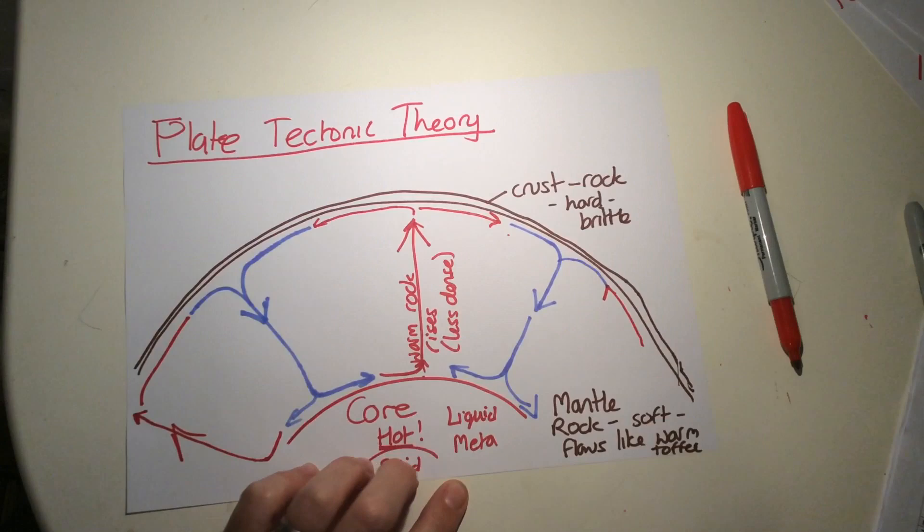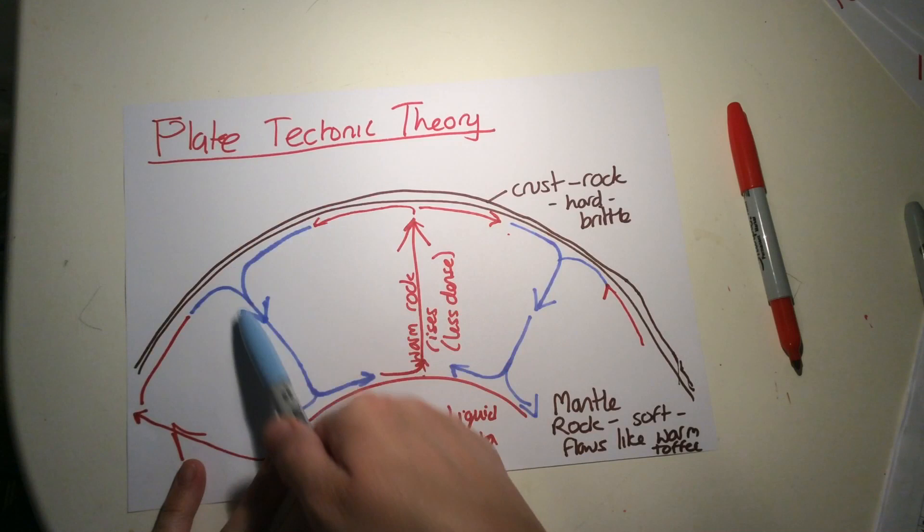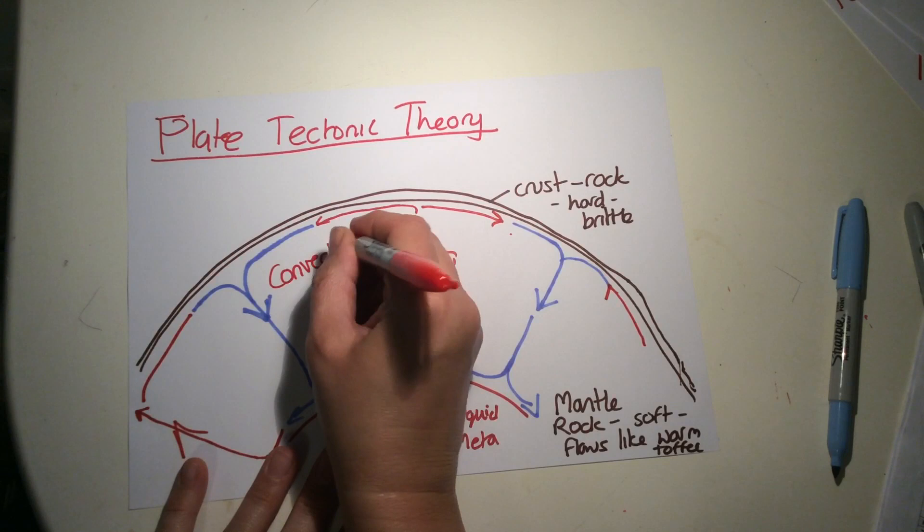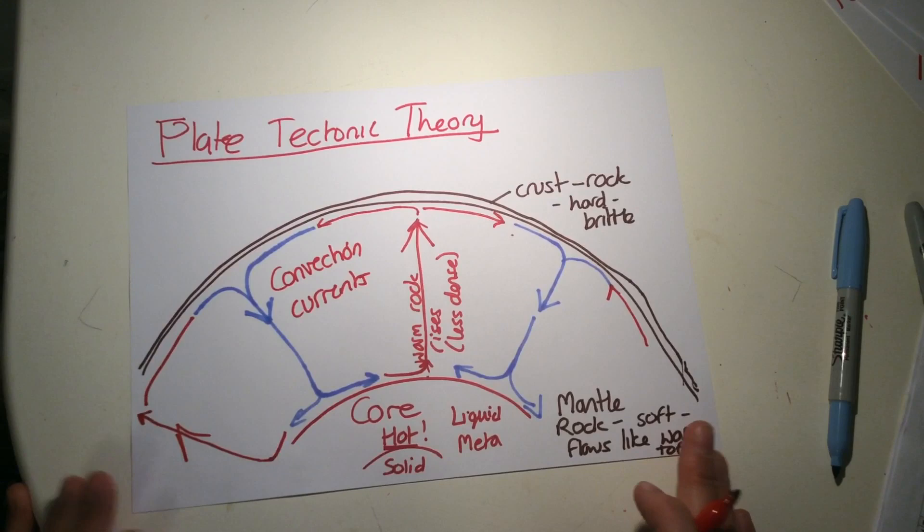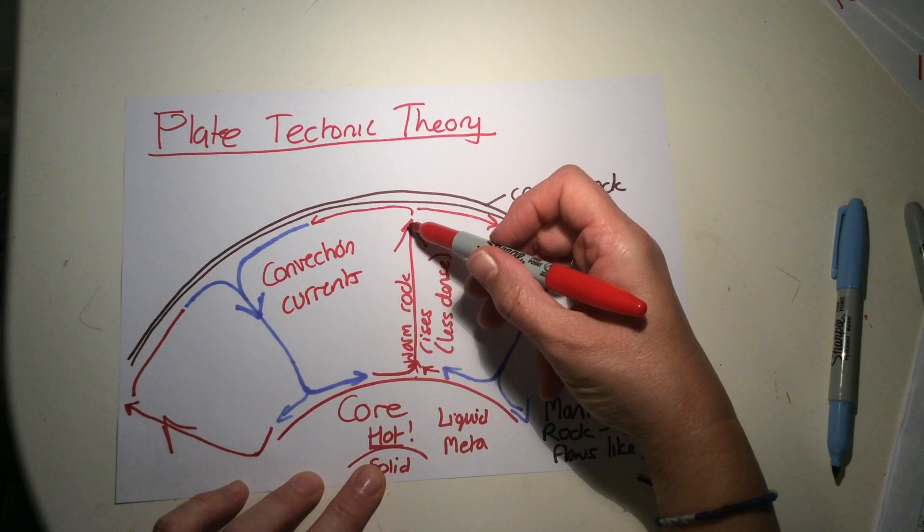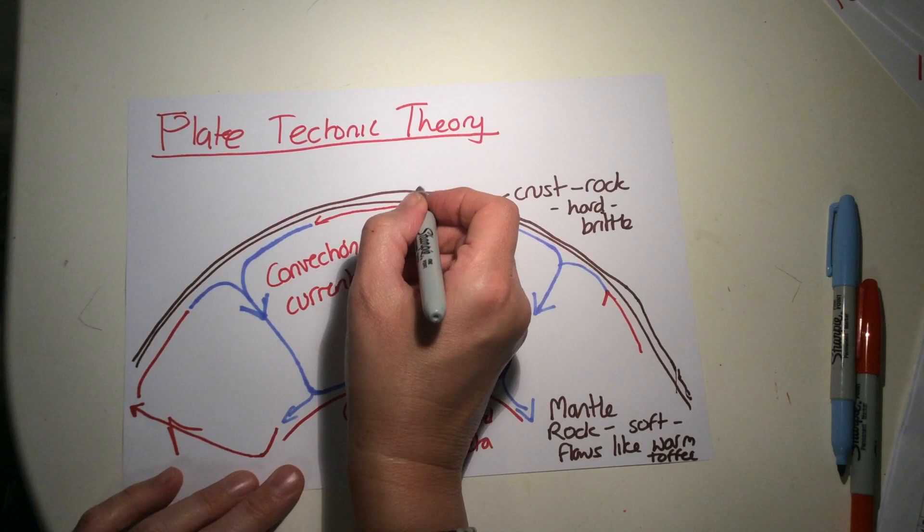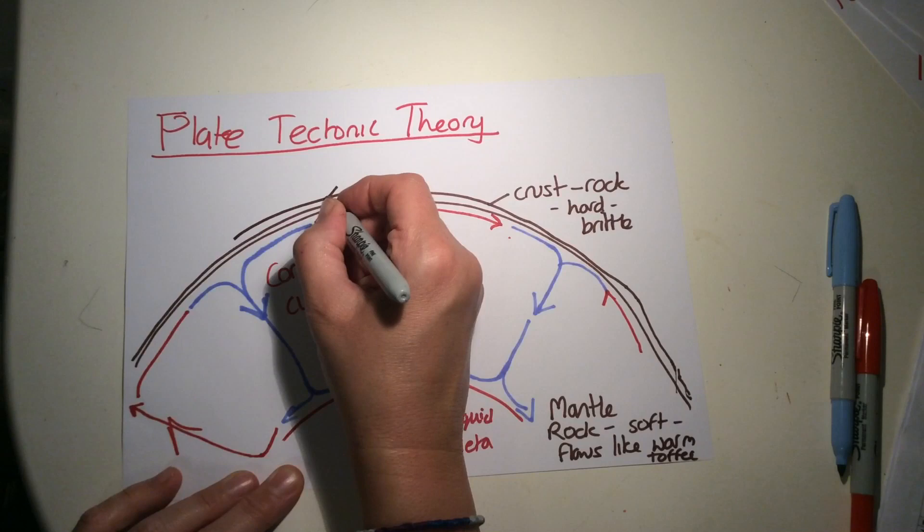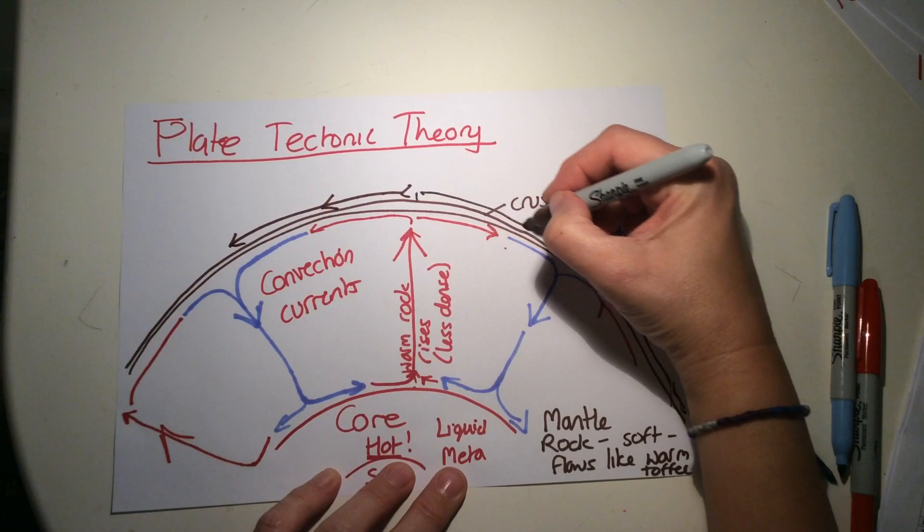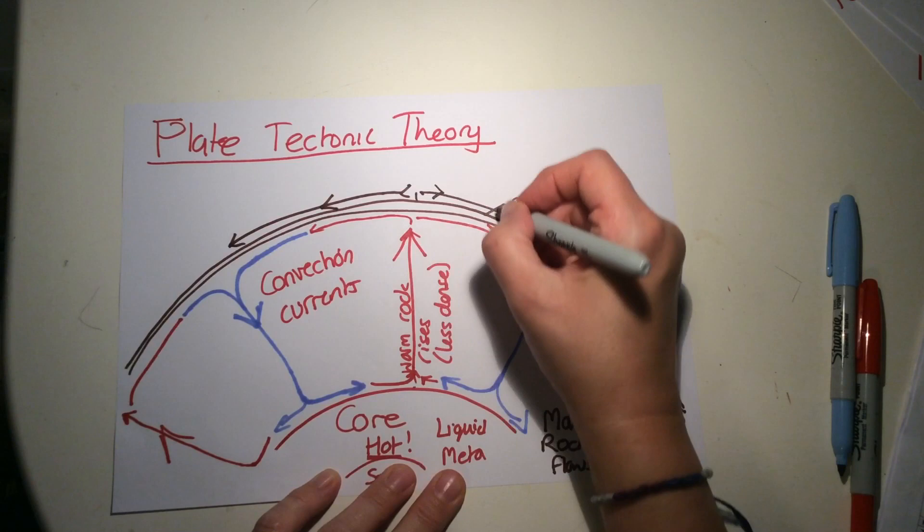These areas of rock cycling round very, very slowly are called convection currents, and these are the reasons why the plates are moving. This is the plate tectonic theory. As this rock rises and is forced underneath the crust, the crust moves with it. From this point, this part of the crust is going to be moving that way, and this part of the crust is moving this way.